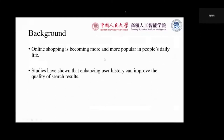In recent years, online shopping is becoming more and more popular in people's daily life. To buy certain items, users usually issue queries to describe their demands, and then the platform provides item lists related to the queries. Similar to web search, studies have shown that enhancing user history can improve the quality of search results. For example, if a user used to buy Apple's products and now issues a query 'computer', what he really wants to buy may be Mac.